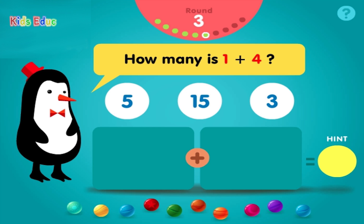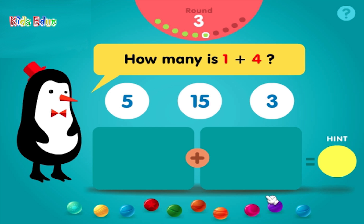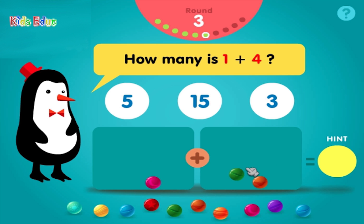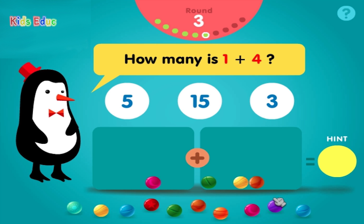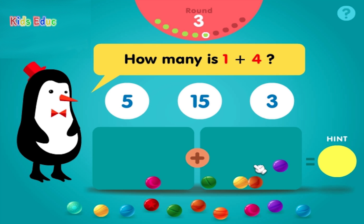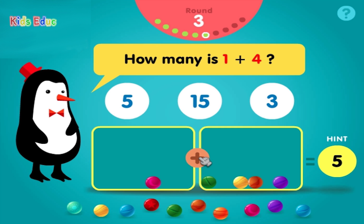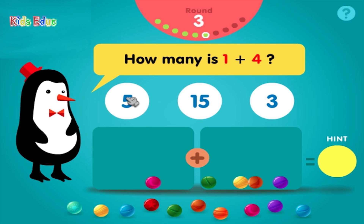How many is 1 plus 4? 1, plus 1, 2, 3, 4, equals 5. Correct!